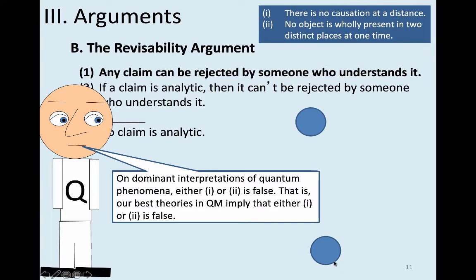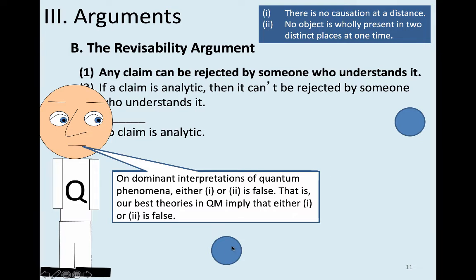Suppose two particles are such that the position of one determines the position of the other, but there's nothing in between them causing that — no chain of bumps. It's rather that when one takes on a determinate position, the other does too. You're going to have to say one of two things: either the object is wholly present in both places, which is why the position of one determines the other; or you're going to have to say one object taking on a certain value causes the other to take on a certain value, even though they're distant, even though there's nothing in between them.